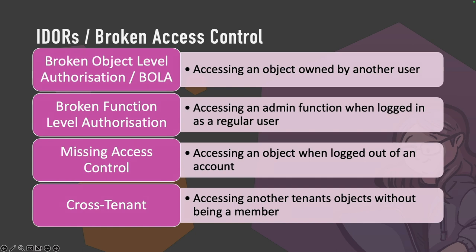Broken function level authorization is when a regular user can perform an admin function without the required role. Missing access control means nothing was ever implemented — it's completely missing. You might be able to access an object owned by a user while logged out entirely. Finally, cross-tenancy: in enterprise software, many companies share the same application. Being an admin in organization A and accessing organization B's resources is also broken access control.